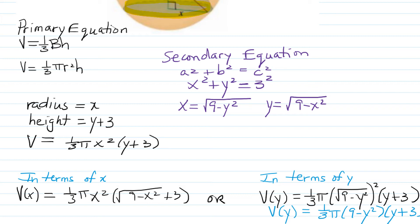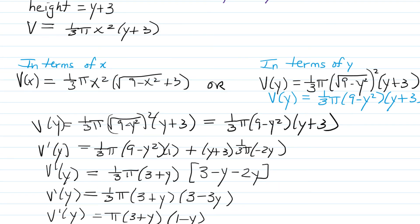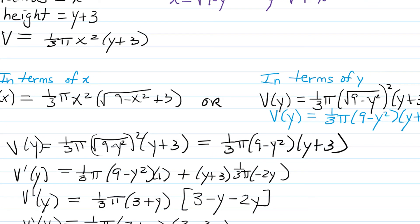However, it'll work out either way. Let's find the derivative of V(y). I decided to leave it factored and use the product rule to find the first derivative. I'm thinking of (1/3)π(9-y²) as the first function and (y+3) as the second. The derivative of V would be the first function times the derivative of the second, which is just 1, plus the second function times the derivative of the first, which is (1/3)π(-2y).